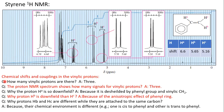The first question is: how many vinylic protons are there? This alkenic part of the molecule has one, two, three — so we have three vinylic protons. These vinylic protons are in the form of CH2 and CH.